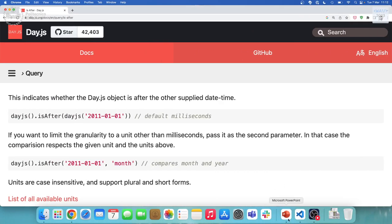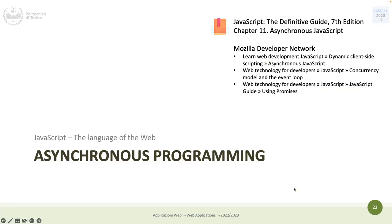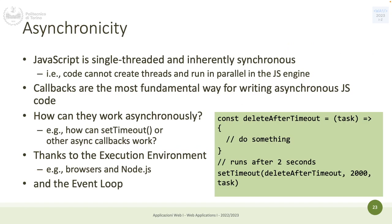Now, just briefly, asynchronous programming. Up to now we have used synchronous functions — all the code seen today is synchronous. JavaScript is actually single-threaded, so it's synchronous by definition: it has just one thread, one process, and everything runs there. You cannot have multiple threads by default in JavaScript.